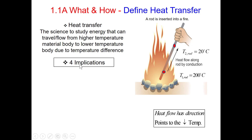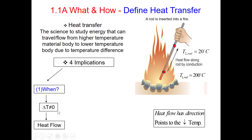There are four implications. The first implication is: under what condition will we witness a heat transfer process? The answer is: whenever there is a temperature difference, there is heat flow. For example, a rod is inserted into fire. At one end the temperature is 200 degrees, at the other end it is 20. So there is a temperature difference, then there is a heat flow.